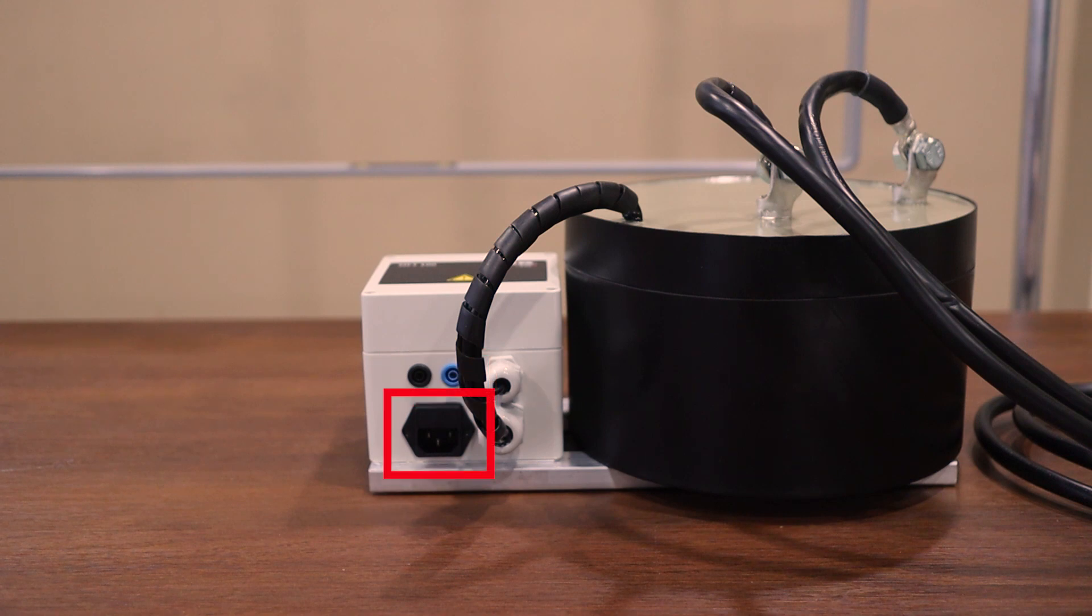Just below that we have a second NEMA type connection and that's the control power required for the MFT 100 to run. Now if you look out there you'll see there's two different variations on the MFT 100, a 120 and a 230. We are using the 120 for today's video.